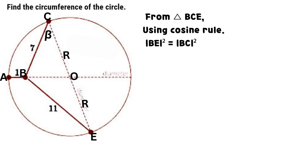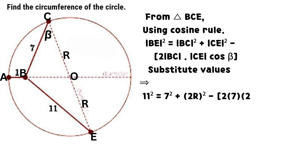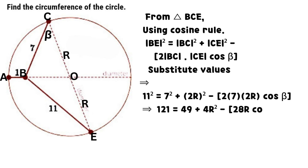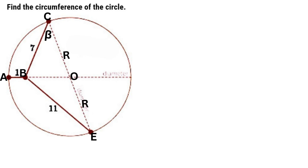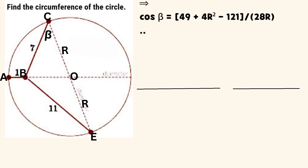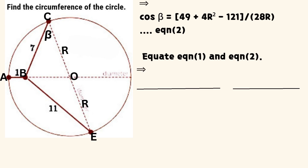From triangle BCE, using the cosine rule, the square of line BE equals the sum of the square of line BC and the square of line CE, minus 2 times the product of line BC and line CE times cosine beta. Substituting values, 121 equals the sum of 49 and 4 times the square of R, minus 28 times the product of R and cosine beta. Making cosine beta the subject of the formula, we obtain an equation for cosine beta as shown on the screen. We call it equation 2.